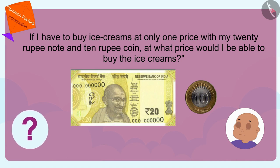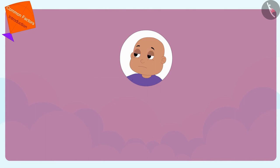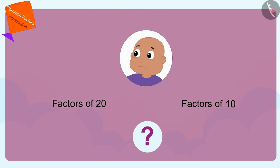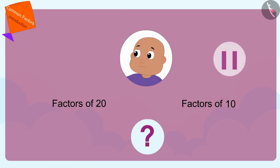Exactly! To solve this question, Babloo has to choose the factors which are the factors of both 20 and 10. Can you tell which are the factors of both 20 and 10? If you want, you can pause the video and find the answer.